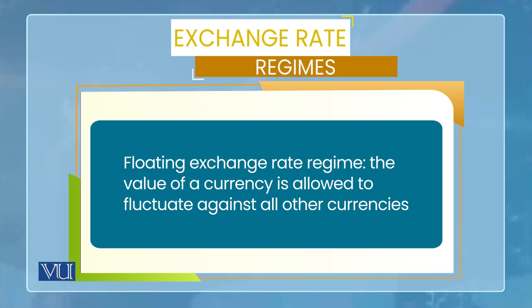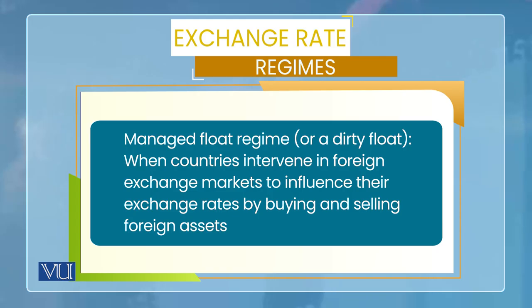بنیادی طور پر یہ دو ہی types ہیں، لیکن ایک تیسرا ان دونوں کا combination بھی ہے جسے managed float یا dirty float کہتے ہیں۔ اس میں exchange rate fluctuate تو کرتا ہے — fixed نہیں ہوتا — لیکن اگر central bank دیکھے کہ excess fluctuation ہو رہی ہے یا exchange rate کسی undesirable value کی طرف جا رہا ہے، تو central bank market میں intervene کرتی ہے اور exchange rate کو اپنی مرضی کی value کے around لے آتی ہے۔